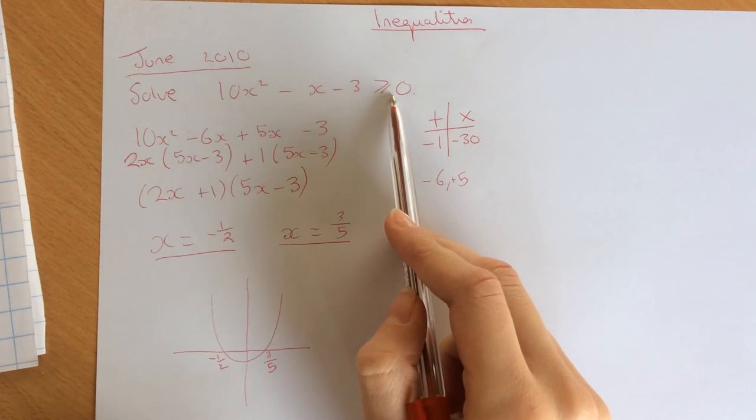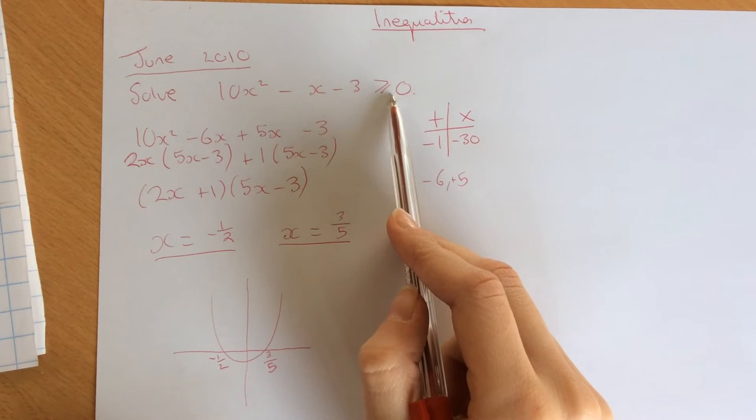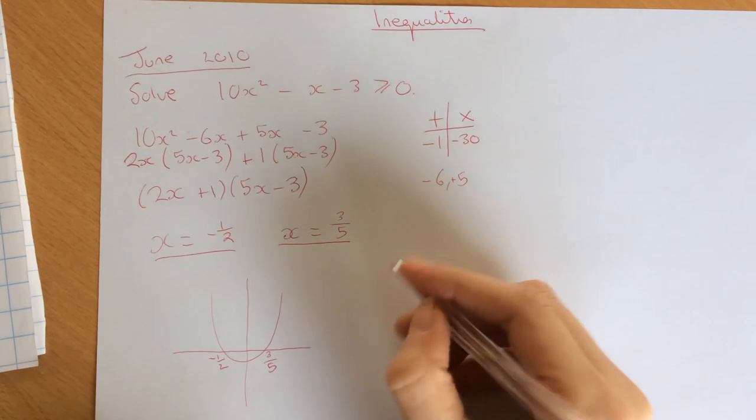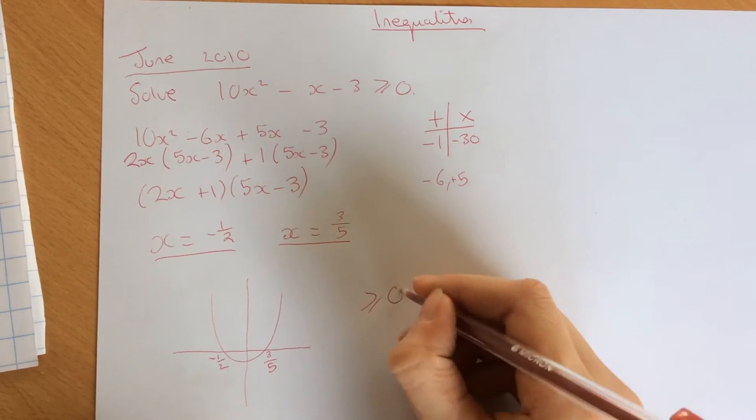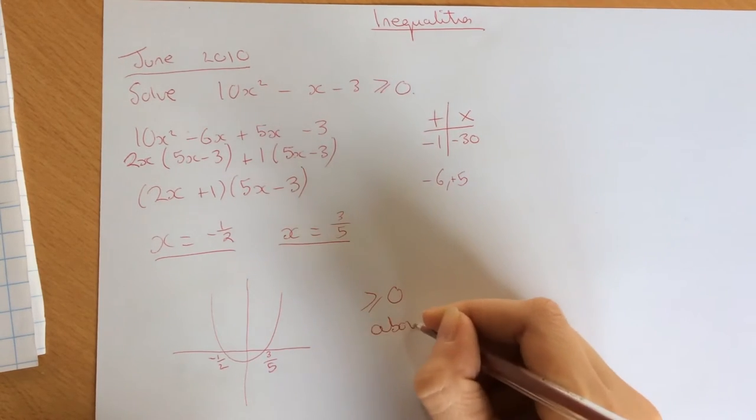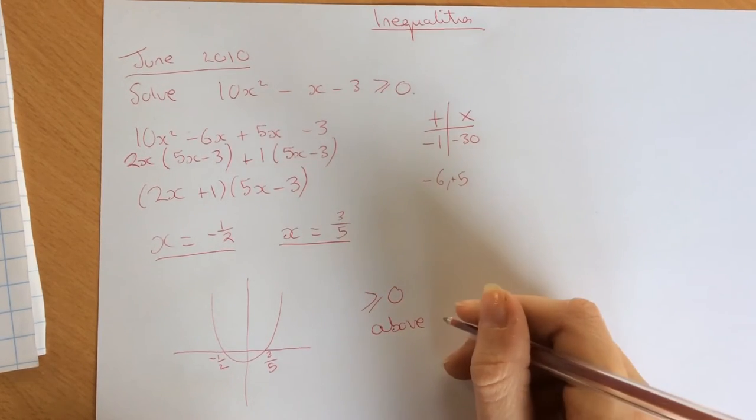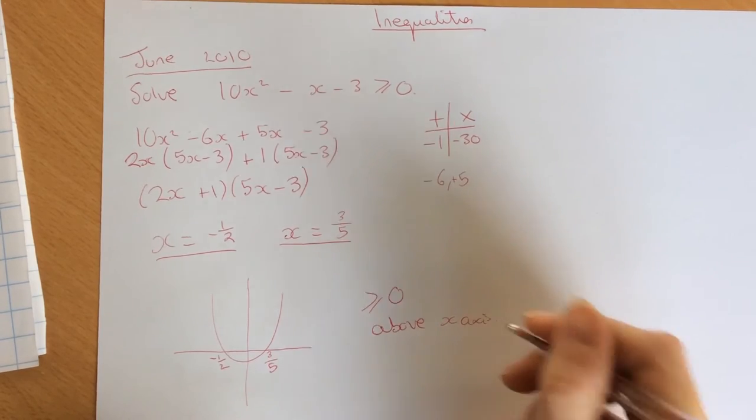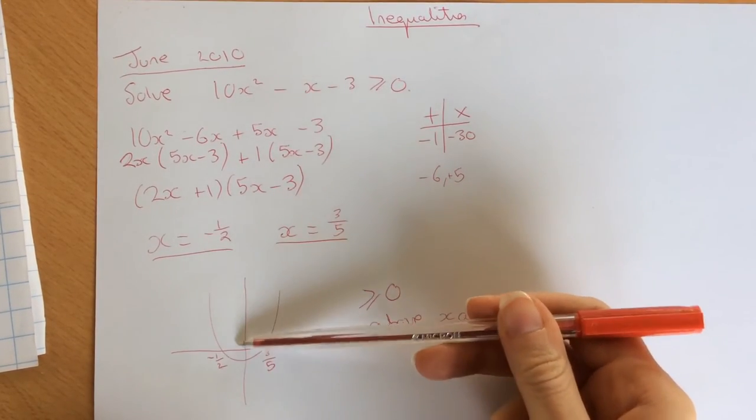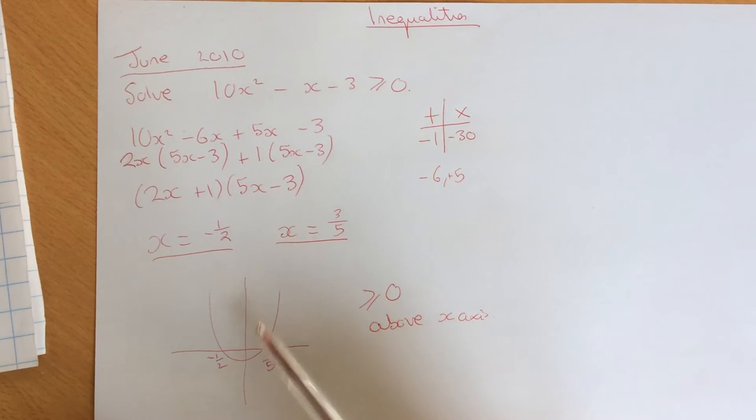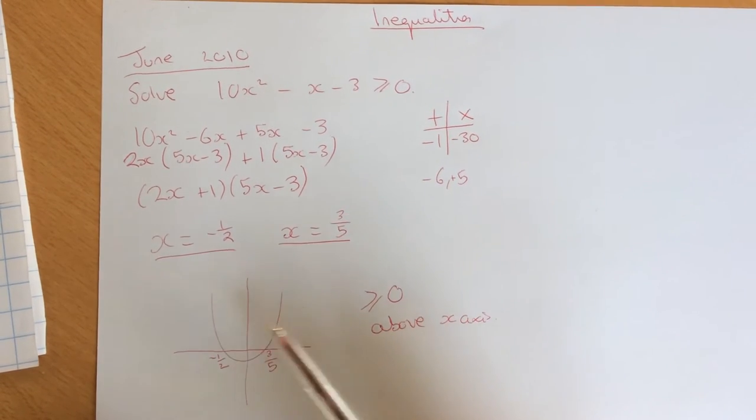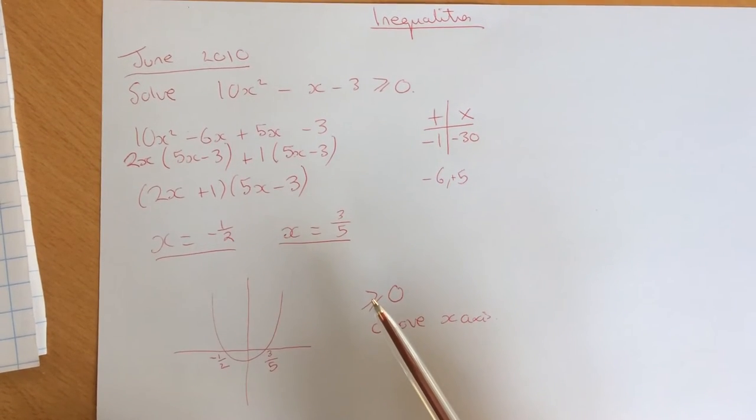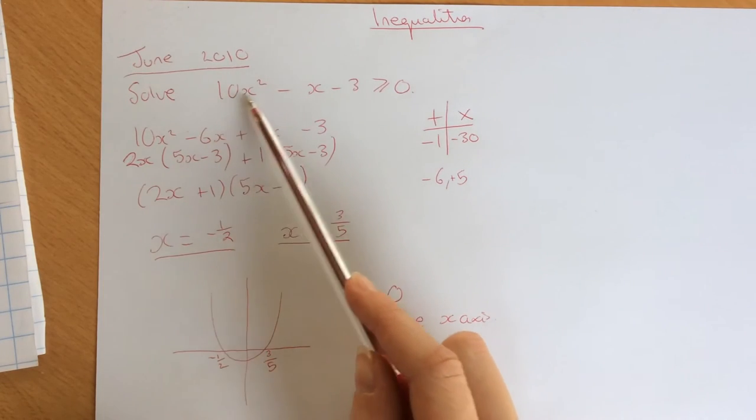Now we know that it is greater than or equal to 0. It's going to be above the x axis, so it's going to be in this part above. Now we need to work out which part, is it this part or is it outside that satisfies the equation?